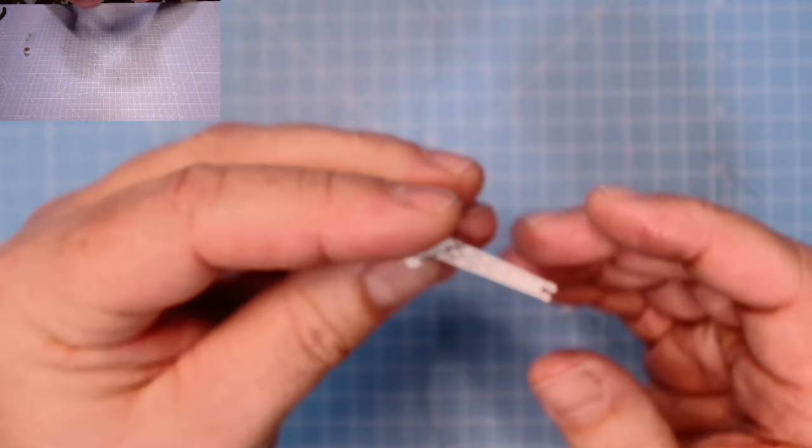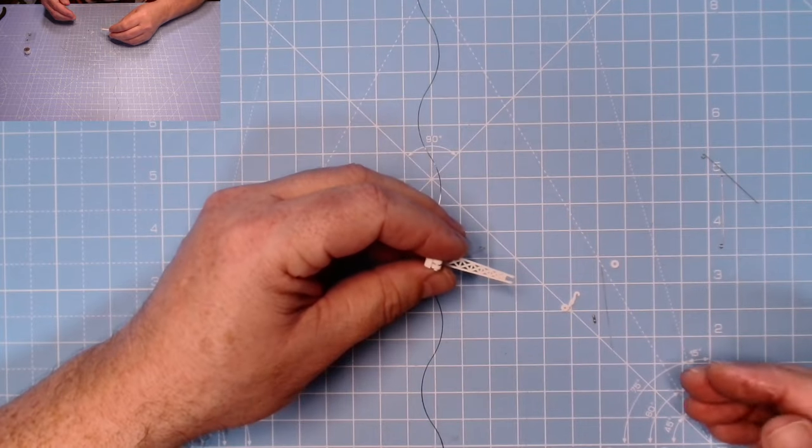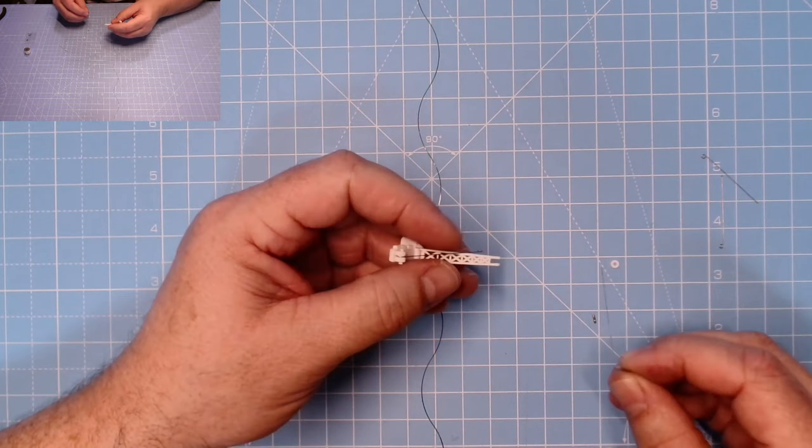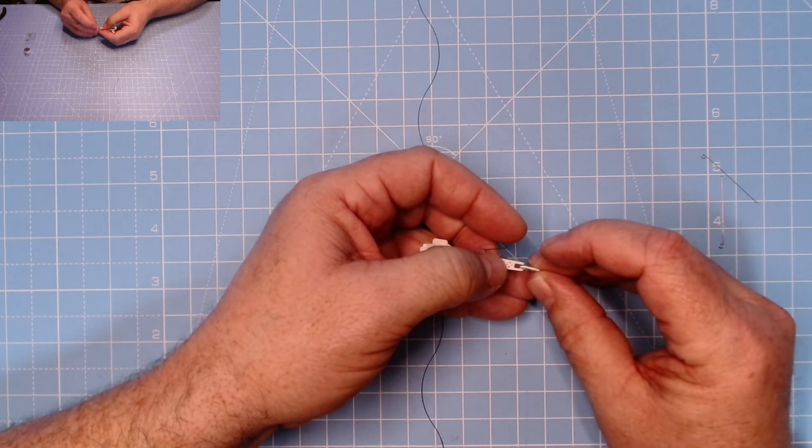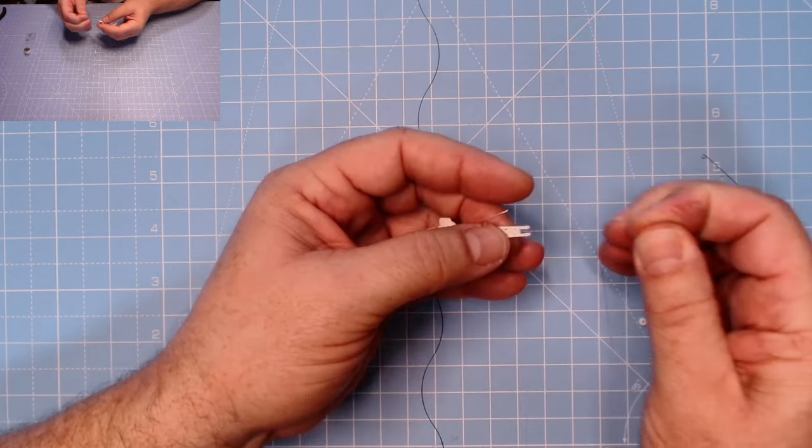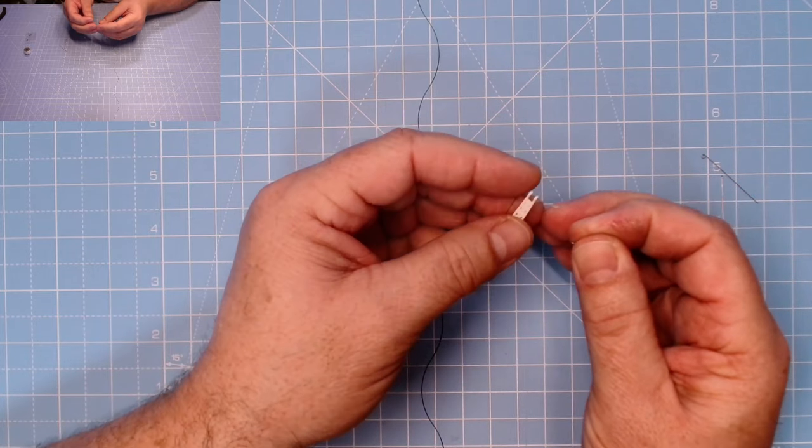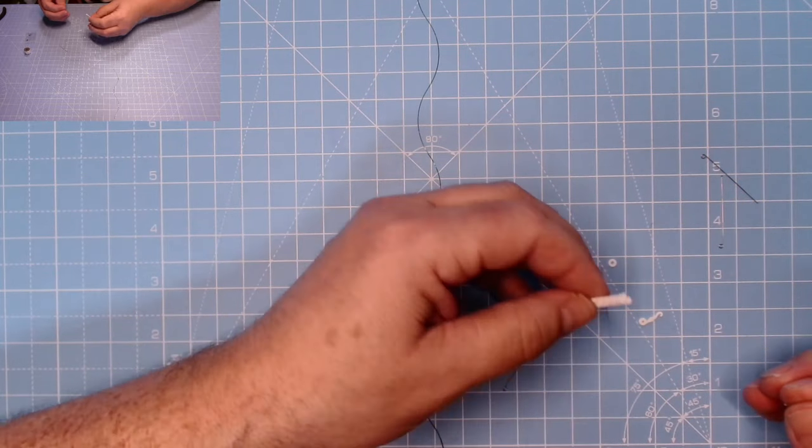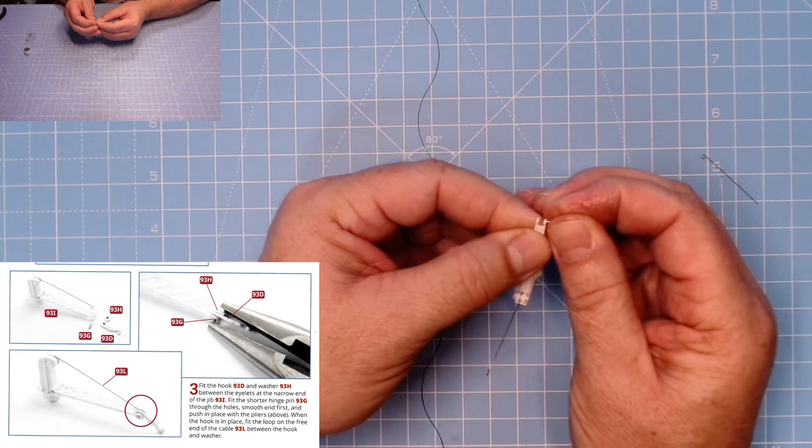But you can see it there. Excellent. And that end is not loose. There we go, looking great. Excellent, that pin has gone fully through. Next we need the hook which will go in here, and we need that washer and this little pin.